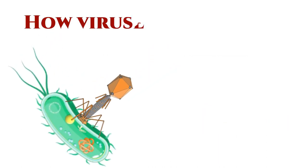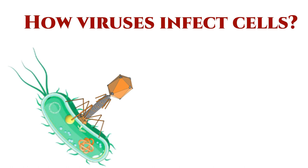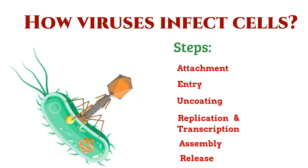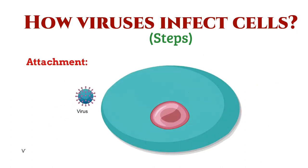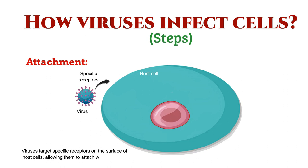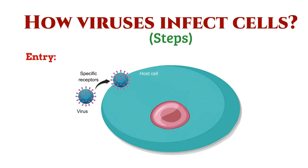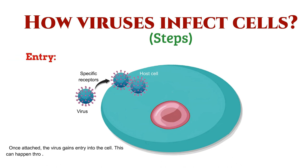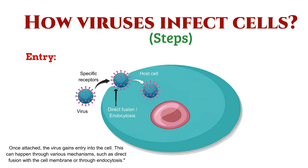Viruses infect cells through a multi-step process that typically involves the following stages. The first step is attachment: viruses target specific receptors on the surface of host cells, allowing them to attach with precision. Step 2 is entry: once attached, the virus gains entry into the cell through various mechanisms, such as direct fusion with the cell membrane or endocytosis.